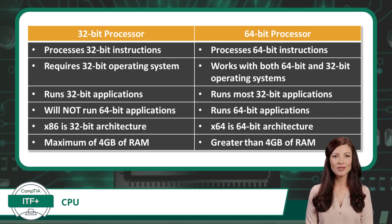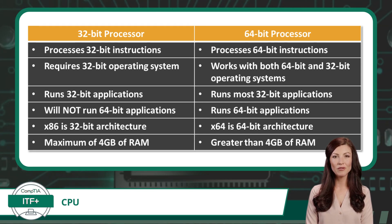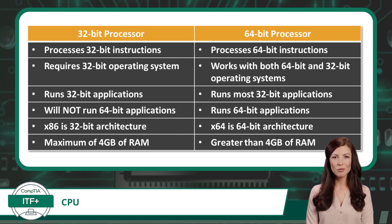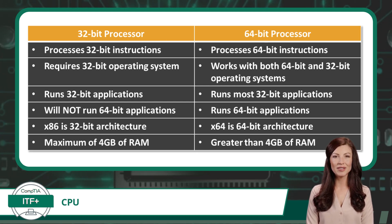This has a trickle-down effect. First up is the operating system: a 32-bit processor is compatible with a 32-bit operating system, while a 64-bit processor is compatible with both 64-bit and 32-bit operating systems. This trickles down further, with the same arrangement holding true for applications. A 32-bit operating system is capable of running a 32-bit application, while a 64-bit operating system is capable of running 64-bit applications and most 32-bit applications.